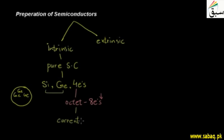We have to vary the vibrations of atoms. Due to temperature variation, electrons can gain extra energy, so the electrons become free. This is how electricity is generated in intrinsic semiconductors.